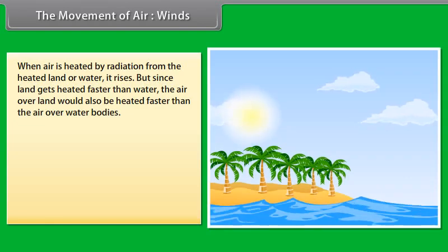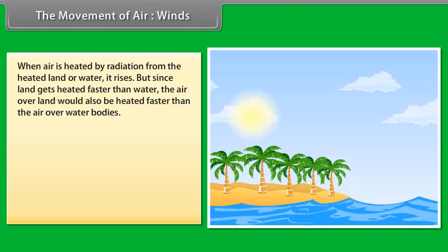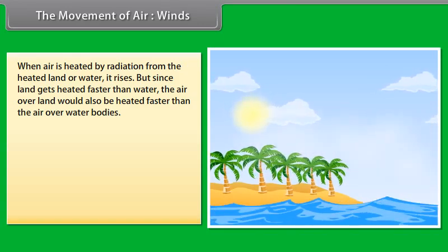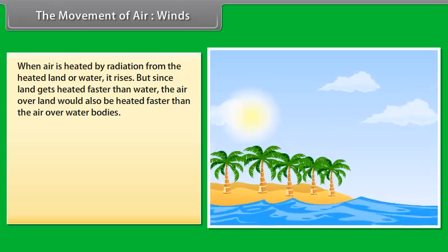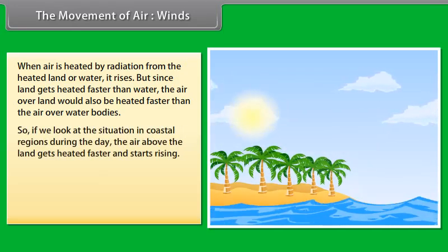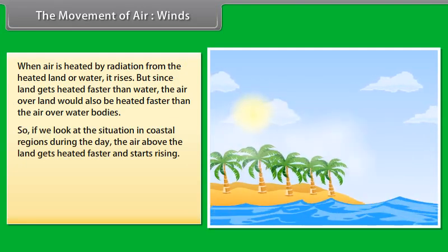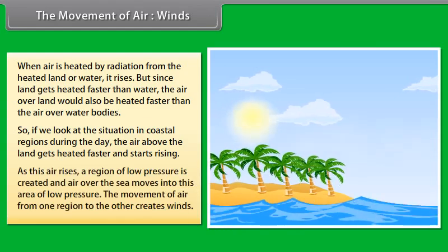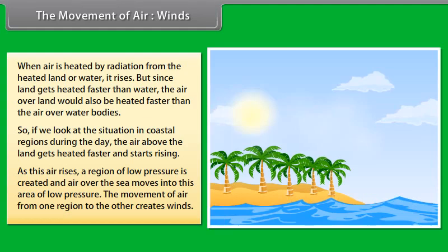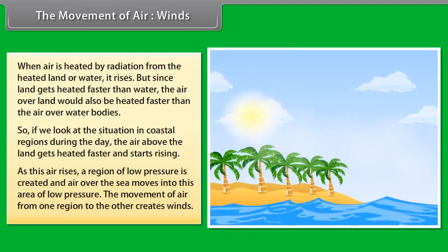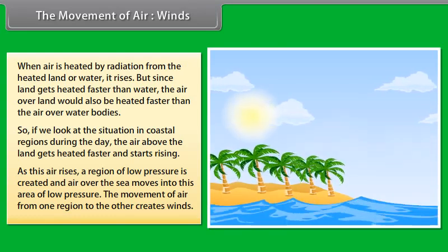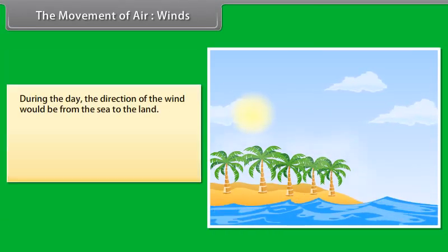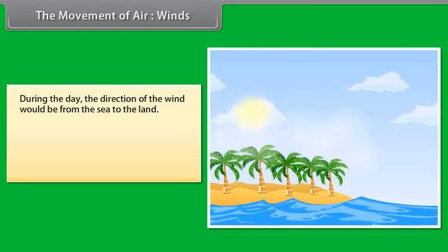When air is heated by radiation from the heated land or water, it rises. But since land gets heated faster than water, the air over land would also be heated faster than the air over water bodies. So if we look at the situation in coastal regions during the day, the air above the land gets heated faster and starts rising. As this air rises, a region of low pressure is created and air over the sea moves into this area of low pressure. The movement of air from one region to the other creates winds. During the day, the direction of the wind would be from the sea to the land.